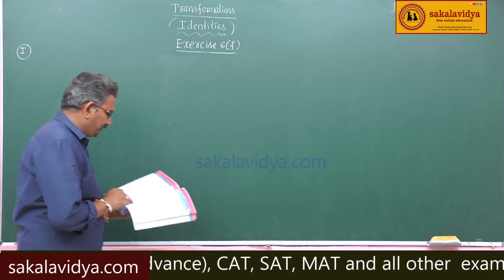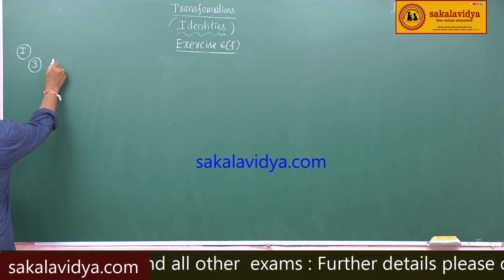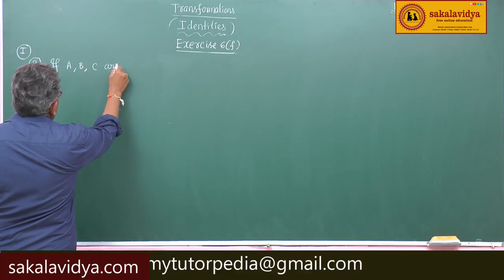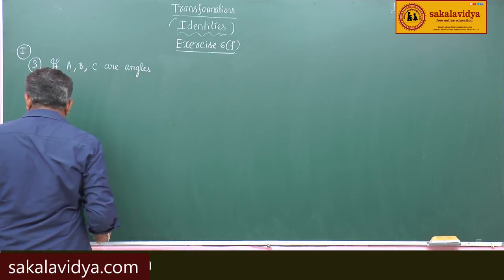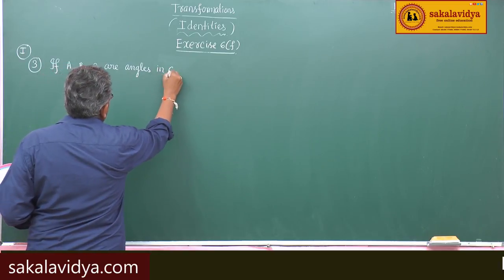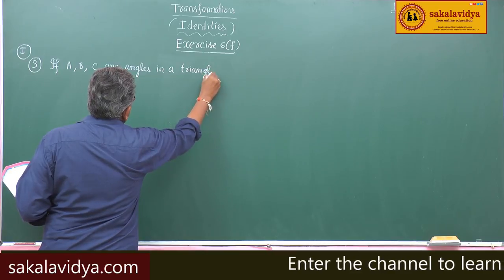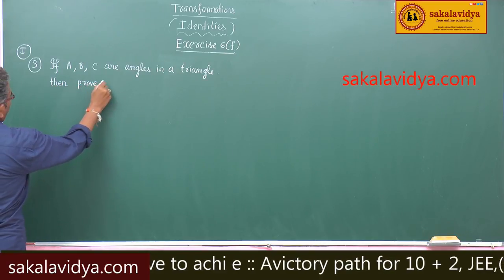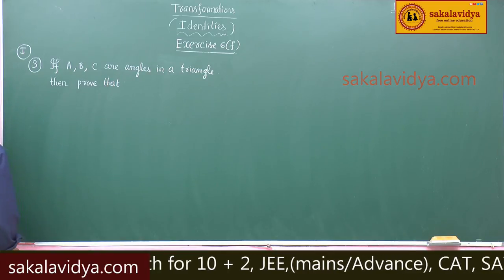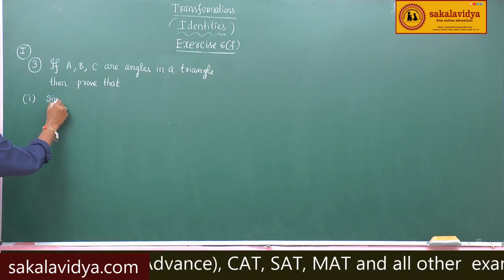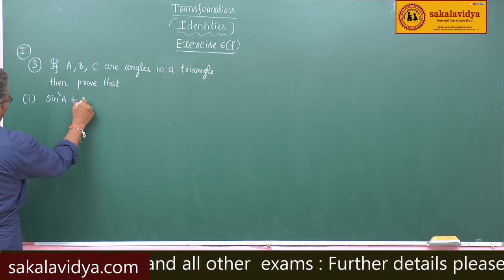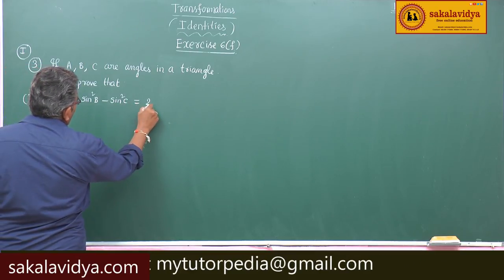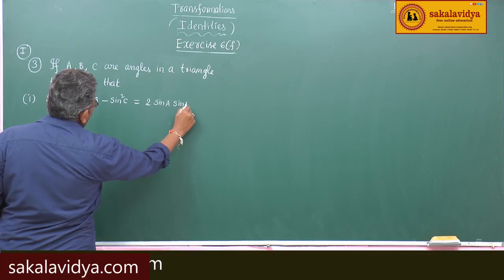Next, third problem. If a, b, c are angles in a triangle, then prove the following. First: sin²a plus sin²b minus sin²c is equal to 2 sin a sin b cos c.